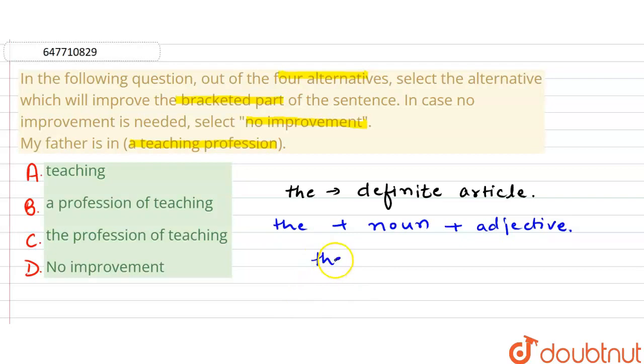The profession. To connect these two, we need a preposition, and that will be 'of'. Right? We should have the 'of' preposition. The profession of teaching. Whose profession? Teaching profession.